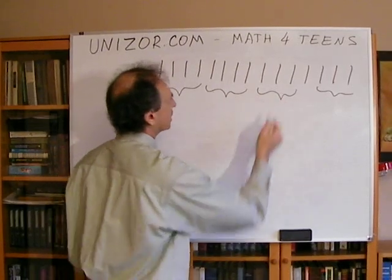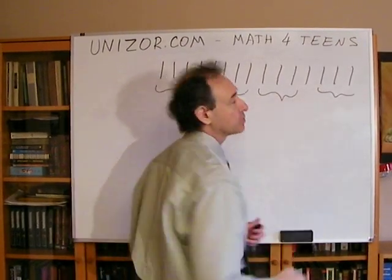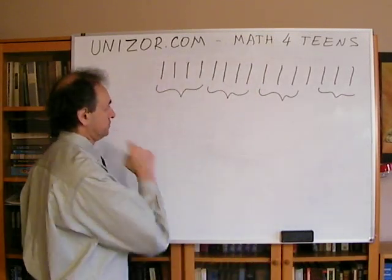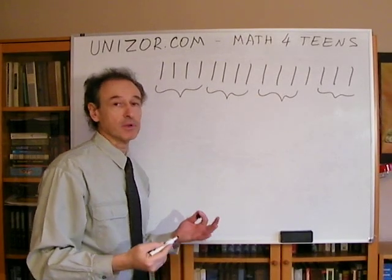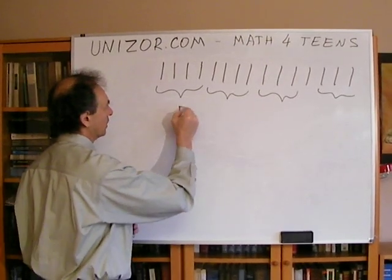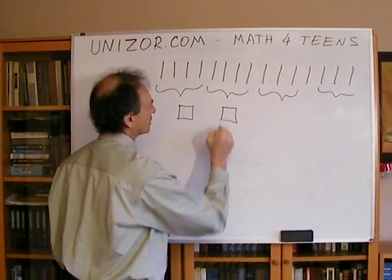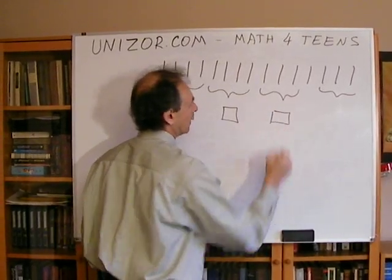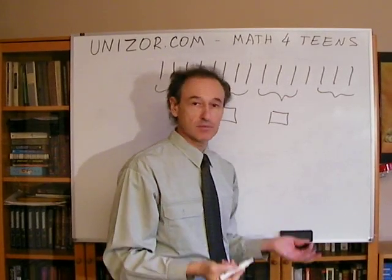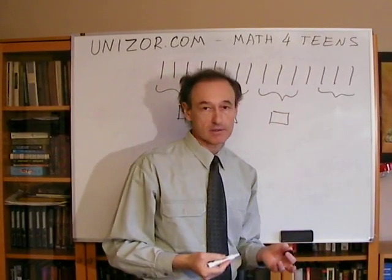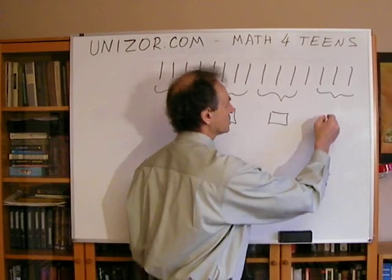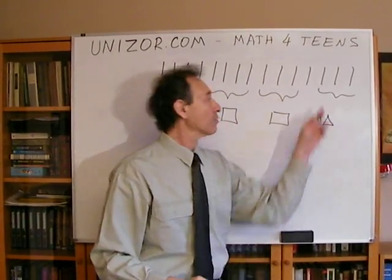I have three complete groups of four and one incomplete group containing only three vertical bars. I invent a special symbol to represent four strikes, four bars in a group, and this symbol will be a square. For the incomplete group with three bars, I'll use a triangle.